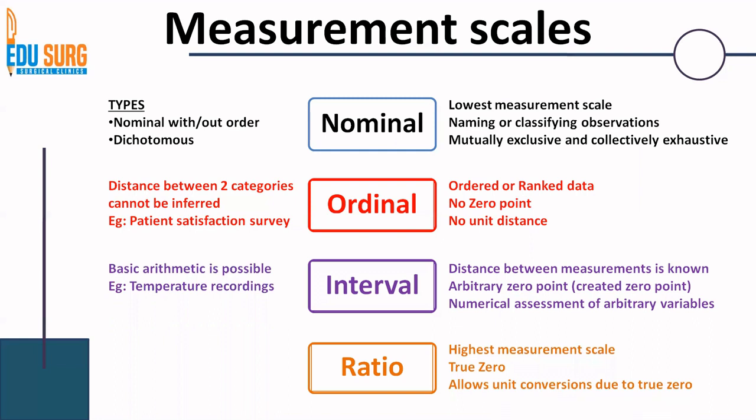Coming to ratio scale, which is the most sophisticated or highest measurement scale. Why? Because it has a true zero. Ratio scale also allows unit conversion due to the true zero — you can convert height from centimeters to meters to feet to inches. It has a true zero and a fixed distance between measurements, so all complicated arithmetic is possible with data collected in ratio scale. Examples are height and weight. Nominal and ordinal are qualitative or categorical data; interval and ratio are numerical or quantitative data.